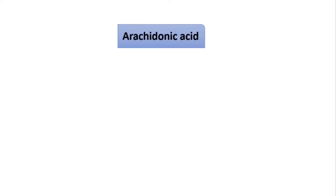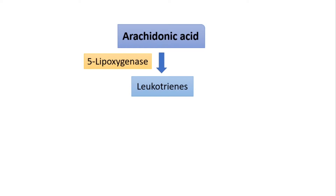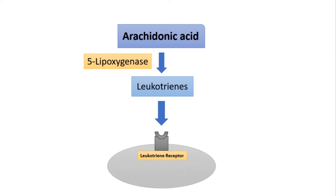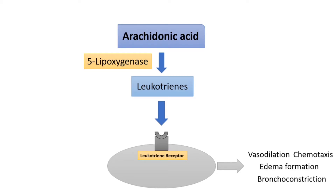As a summary: in the beginning we have arachidonic acid, which will be converted into leukotrienes. The main enzyme responsible for this reaction is called 5-lipoxygenase. Then leukotrienes will go and bind to their surface receptor — the leukotriene receptor — and they will exert their effects like vasodilation, chemotaxis, edema formation, and bronchoconstriction.